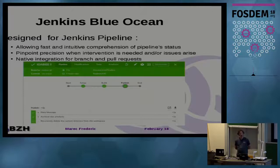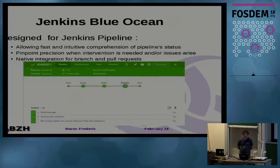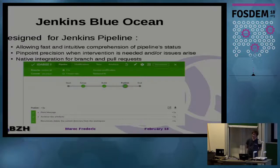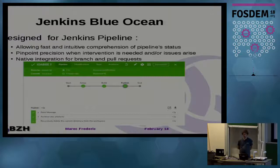Jenkins Evolution is a plugin we designed for the Jenkins pipeline. It will allow fast and intuitive comparison of the status, and active integration of branches and pull requests.